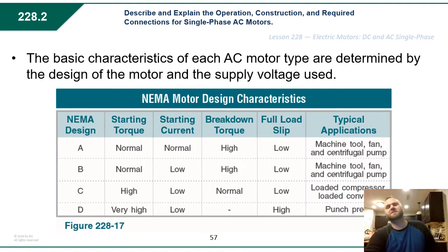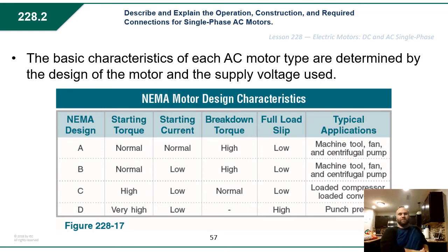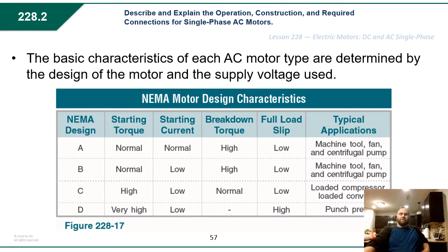The basic characteristics of each AC motor type are determined by the design of the motor and the supply voltage used. NEMA has four different designs for AC motors: A, B, C, and D. Each one has different starting torques, starting current, breakdown torques, full load slip, and typical applications. Know your NEMA designs — when replacing a motor, always check the nameplate for which NEMA design it is.